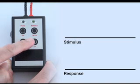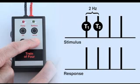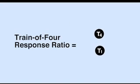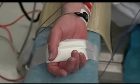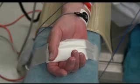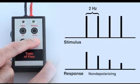The train of four pattern consists of four sequential single twitch stimuli — T1, T2, T3, and T4 — delivered at a frequency of 2 Hz. The train of four response ratio is calculated by dividing the T4 response amplitude by the T1 response amplitude. Calculate the train of four ratio before administering muscle relaxants and use it as the control ratio; the ratio should be 1 or 100%. During a partial non-depolarizing block, the ratio decreases or fades as the block increases.